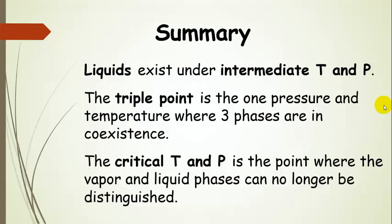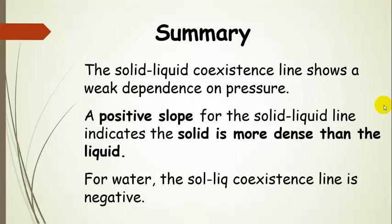Now the triple point is the one pressure and one temperature where all three phases are in coexistence. The critical temperature and pressure is the point where once we go past that, at that point and once we go past it, we can no longer distinguish the vapor and liquid phases. There is a weak dependence on pressure of the solid-liquid coexistence line. And a positive slope indicates that the solid is more dense than the liquid. And this is the normal situation. Except for water, the solid-liquid coexistence line is negative, meaning the solid is less dense than the liquid.